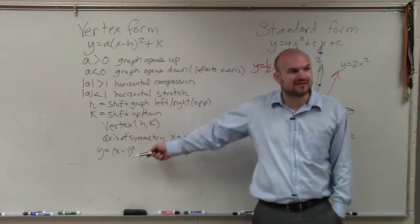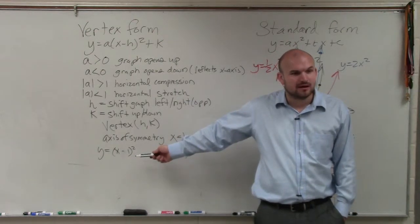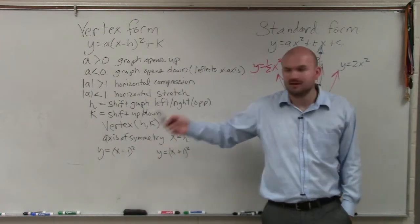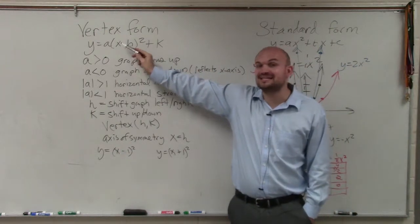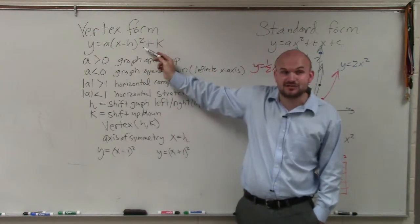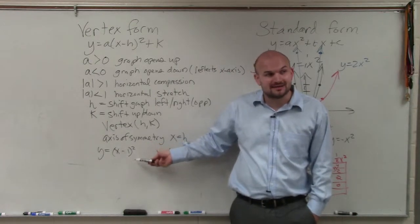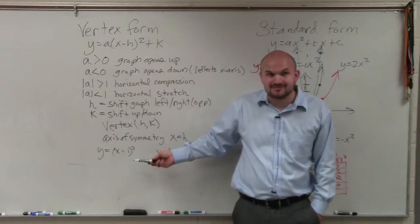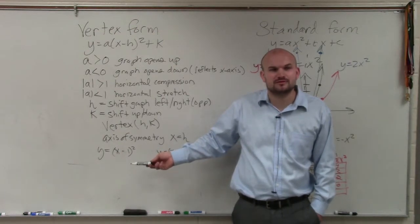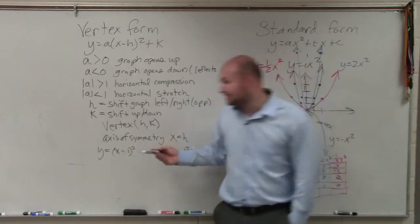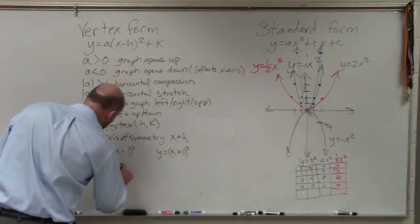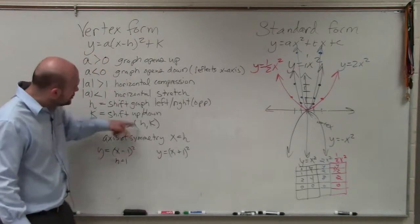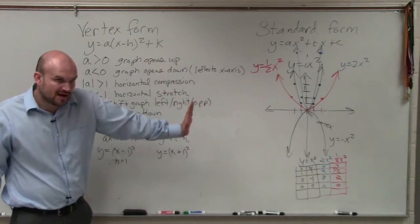The reason being is what is the value of H here? The value of H is 1, not negative 1. Well, because if you look at the formula, it says X minus H. X minus what? What am I minusing? One. So it's X minus 1. So that means H is equal to 1. That means the new vertex is 1, so I'm going to move it to the right one.